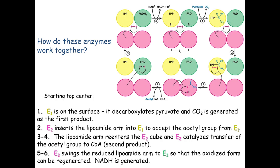Looking at another diagram: the top of the figure represents the face of the inner mitochondrial membrane facing outward — toward the intermembrane space, continuous with the cytoplasm. This is where pyruvate is picked up. Below represents the other face of the inner mitochondrial membrane facing the matrix. Each of the six panels shows a progression of the reaction.